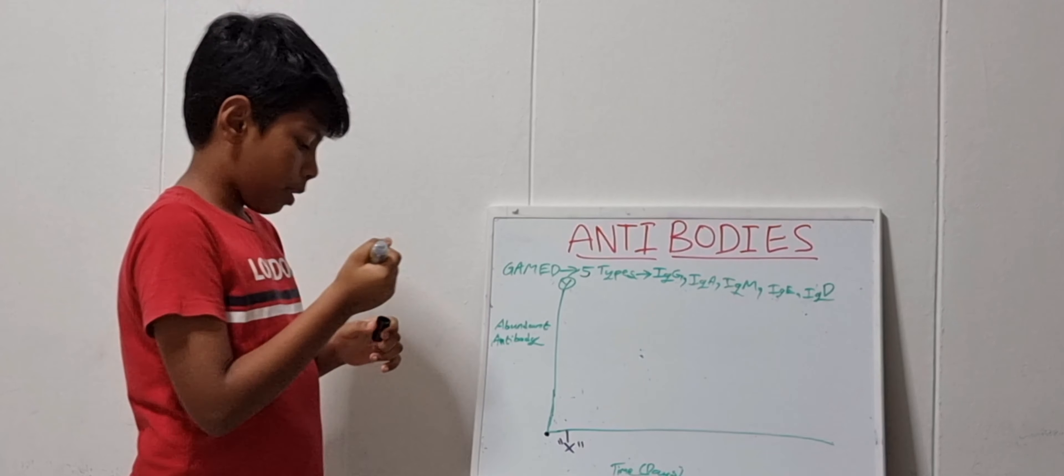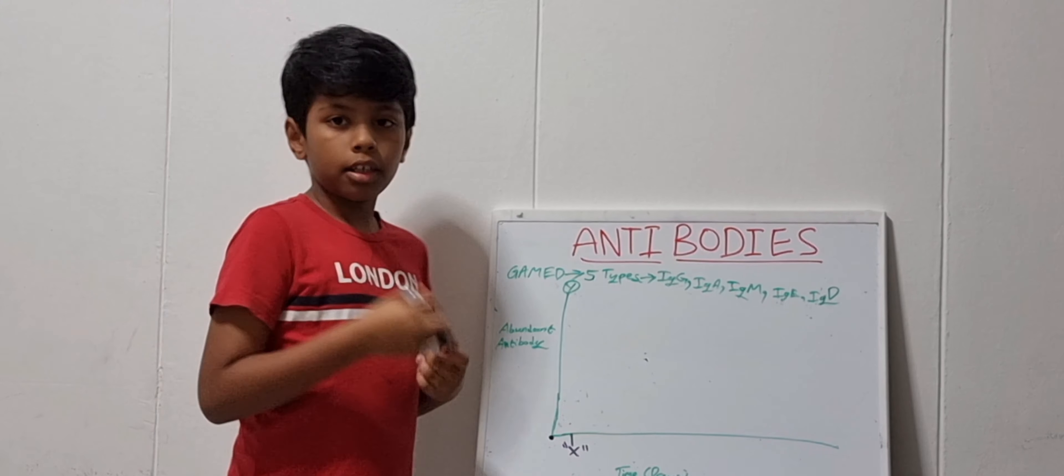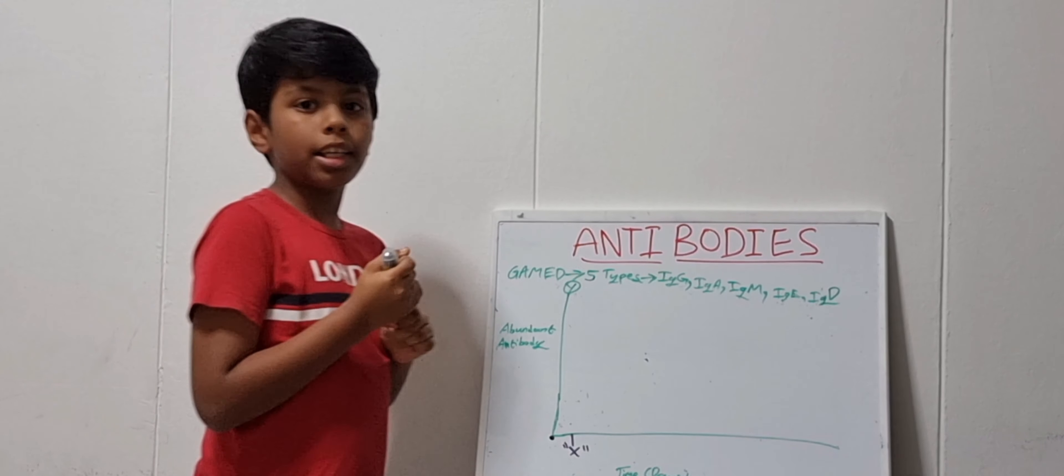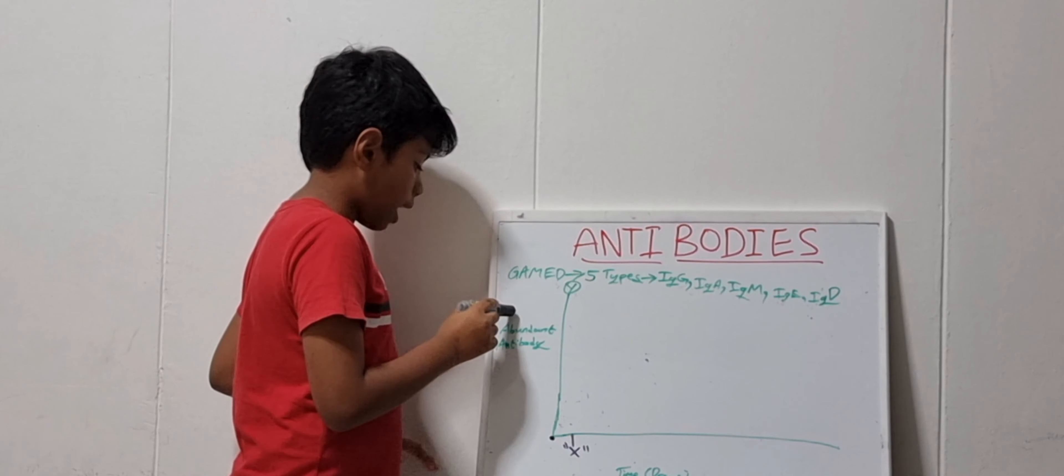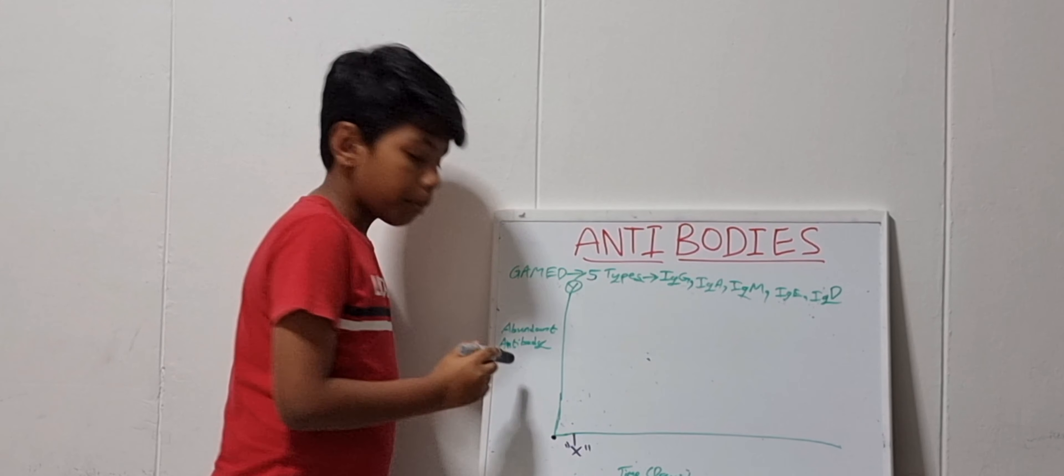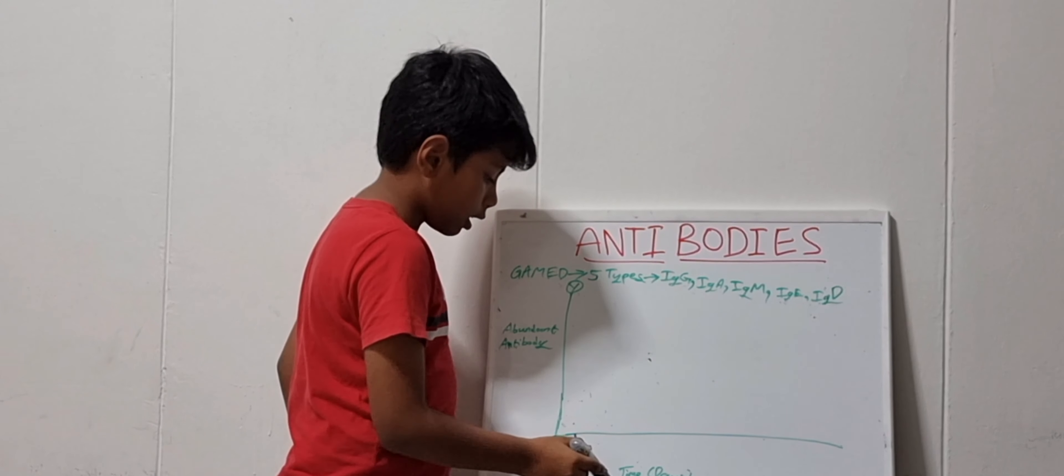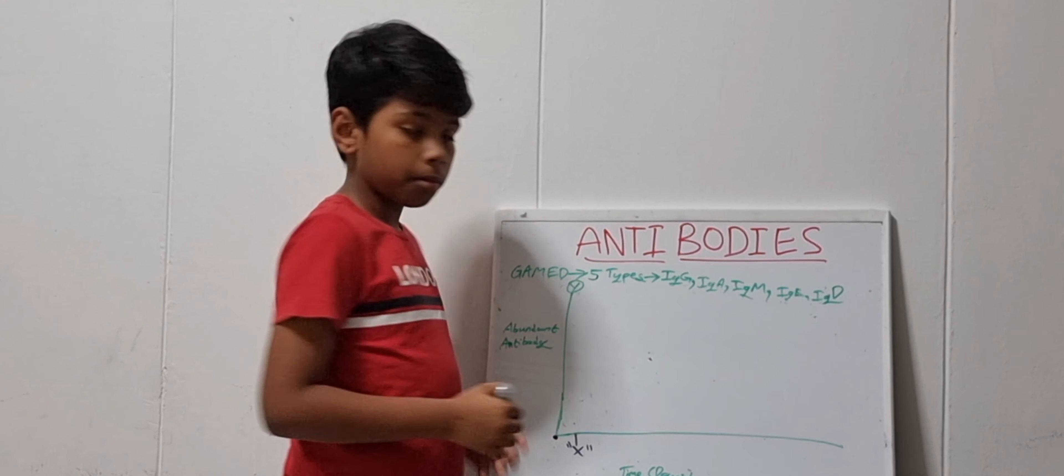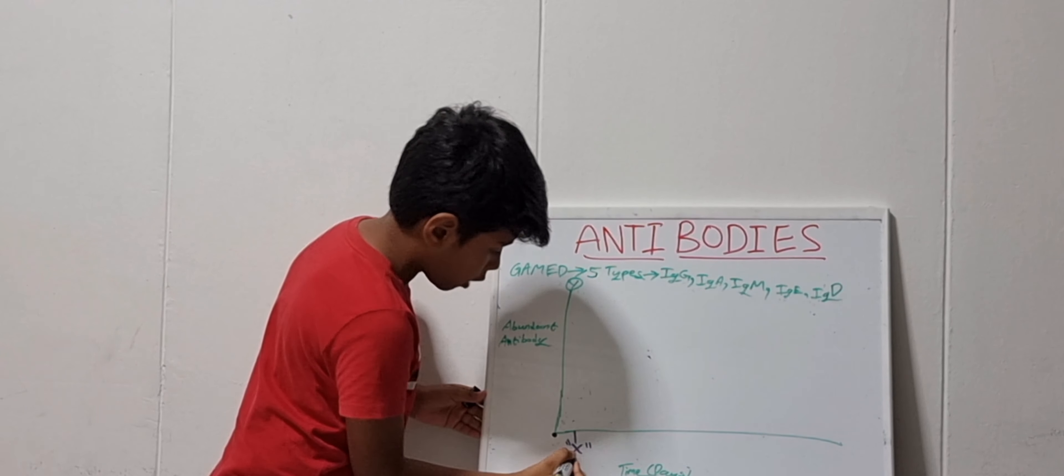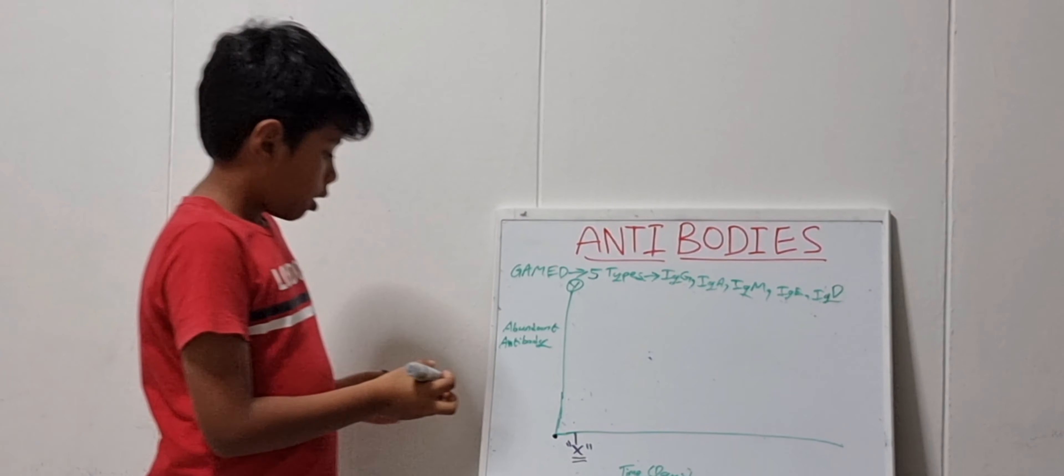Now, in the somatic hypermutation, there is a graph which represents this somatic hypermutation in an easier way. In the Y axis, I have taken abundant antibody. And in the X axis, I have taken time. Now, I am starting an exposure to antigen X.